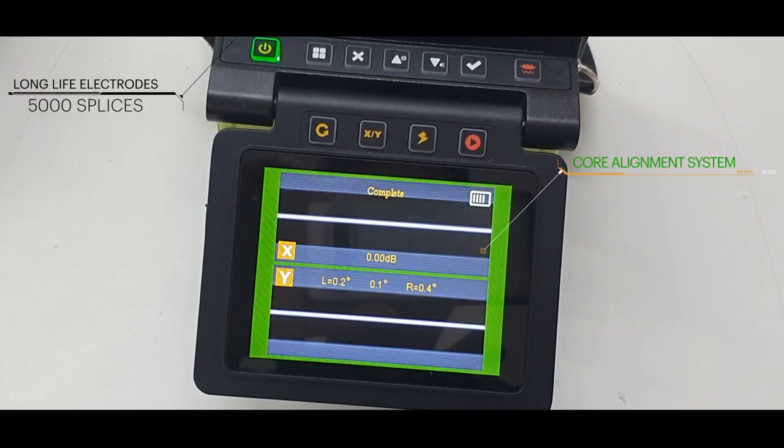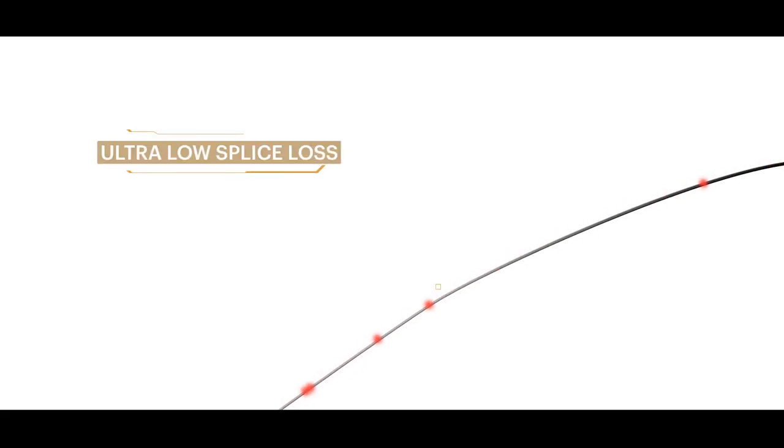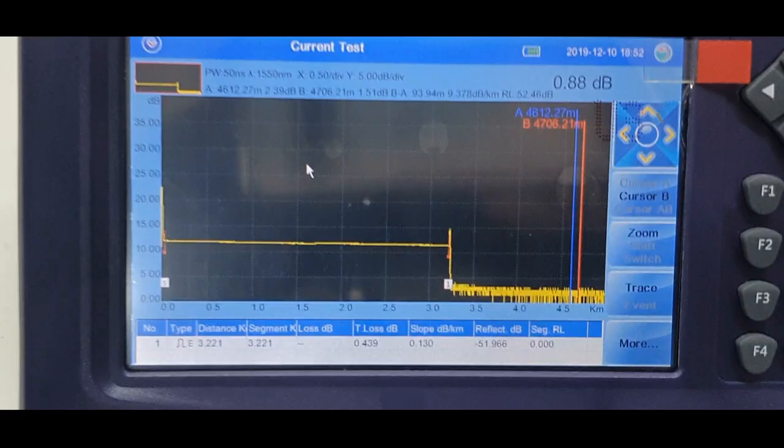But we are going to take the trace using our OTDR and check results on the OTDR. As you can see, that is the acquisition process, and finally the results are being displayed on the OTDR. Apparently we don't have any event.